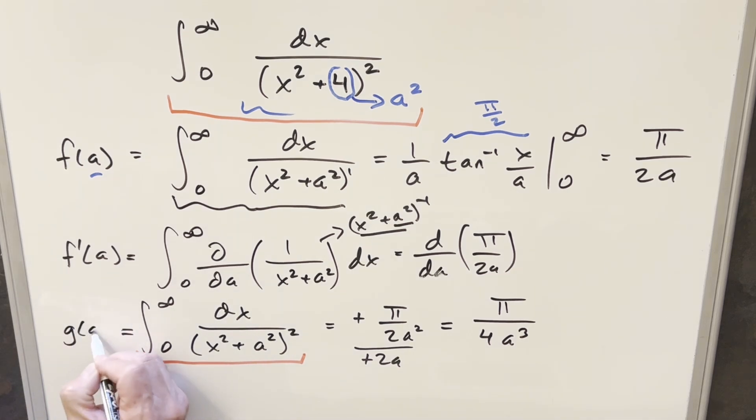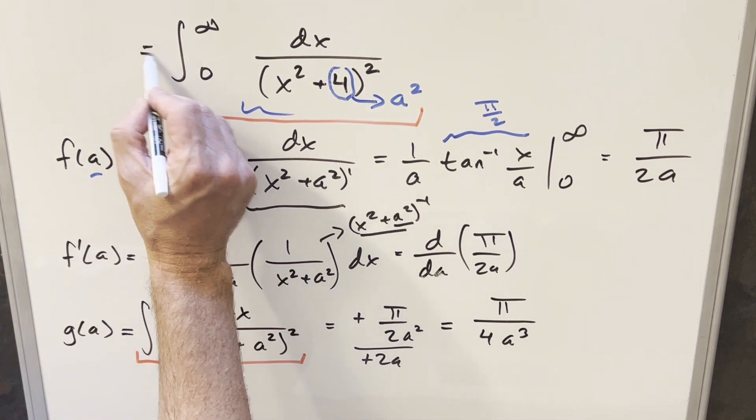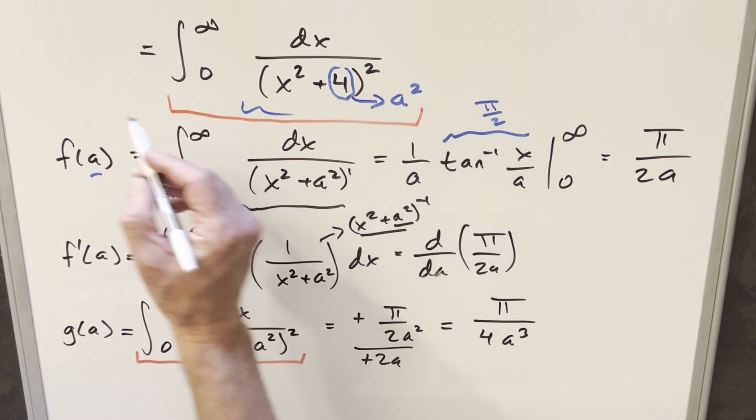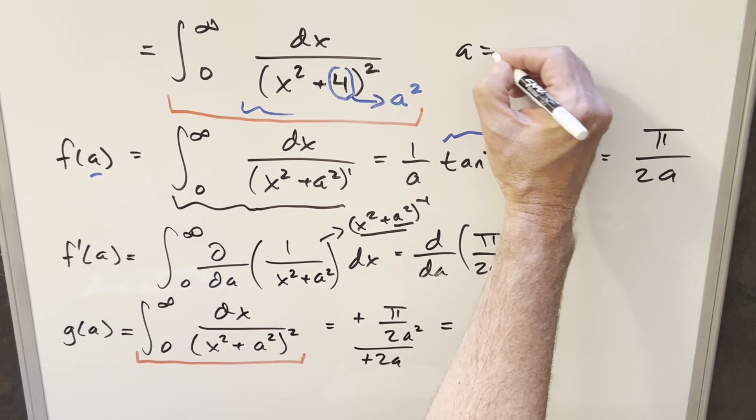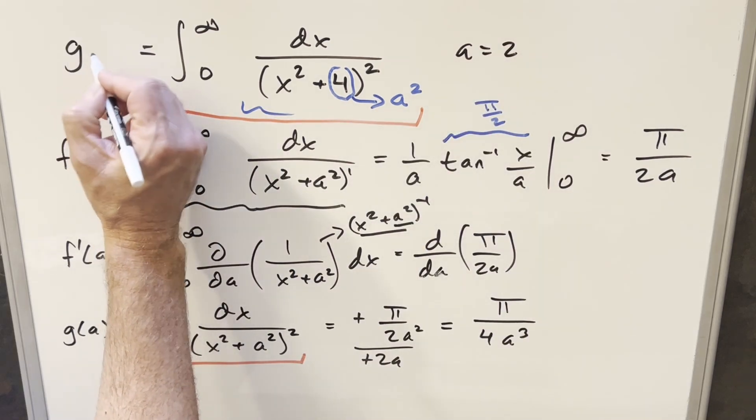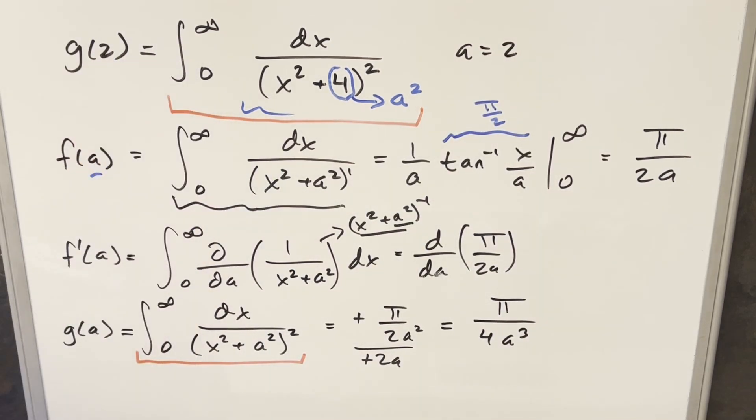We'll give it some other label. We can call it g of a, just separating it from the f of a. And so coming back to our problem, for this a squared to be 4, that means a is 2. So when we have a is 2 on this, this is going to be, our solution is just going to be g at 2. So plugging in to get our g at 2 value, we're going to have just pi over 4, 2 cubed. And so just multiplying it out for my final solution, we have just pi over 32.